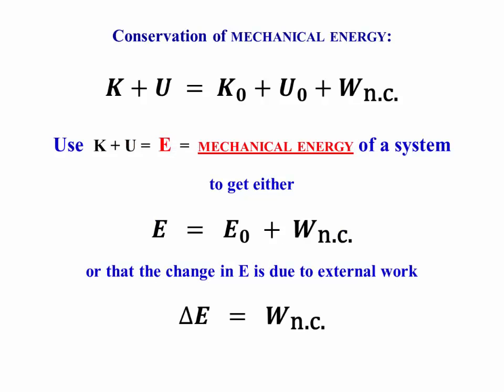Remember that we wrote K plus U final equals K plus U initial plus the non-conservative work done on the system, and we like to refer to the total of the kinetic and potential energies as the mechanical energy E. That allows us to write a very compact expression that says E equals E naught plus the non-conservative work.